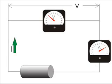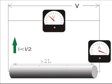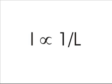If we observe carefully the current through the conductor for different lengths, we will clearly find that current varies inversely with the length of the conductor. It can be concluded that current through a conductor for the same applied voltage is inversely proportional to the length of the conductor. Hence, I is proportional to 1/L. Say this is equation 1.